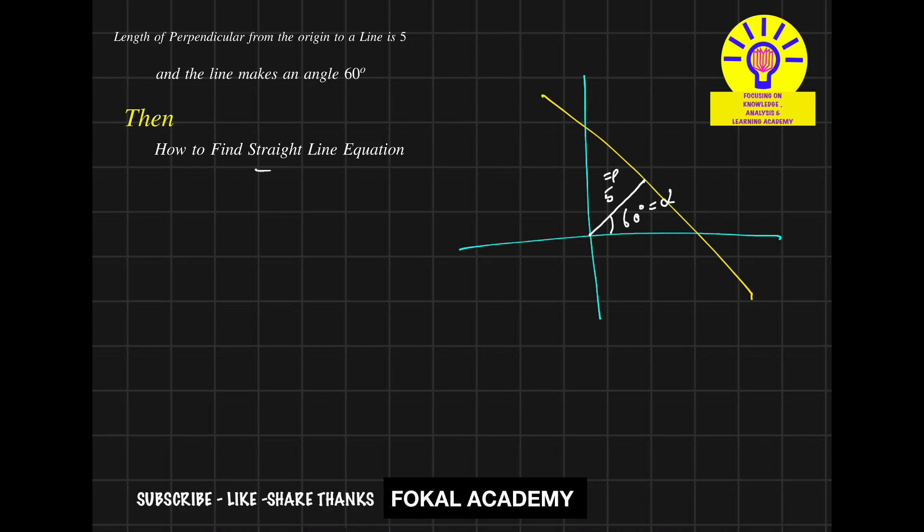Now how can you find the straight line equation? For this equation, so it is in the form of normal form. So we know the standard form of normal form of straight line equation that is x cos alpha plus y sin alpha equal to P.